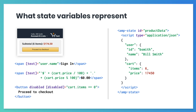Finally, we can bind the disabled property of the checkout button to whether or not the shopping cart contains exactly zero items. The checkout button is disabled by default, but once a user adds an item to their cart, the button will be enabled.